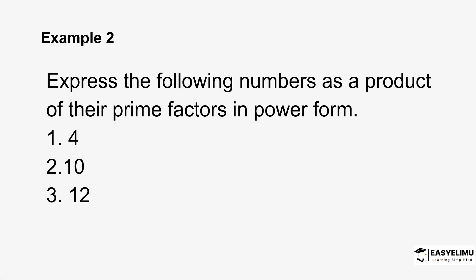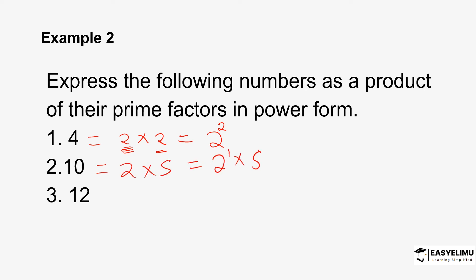We have the second example where you express numbers as a product of their prime factors in power form. For 2 times 2, ask yourself how many times has 2 been multiplied by itself — that becomes the power, so 2 squared. For 2 times 5, it remains 2 to the power 1 times 5 to the power 1. For 12, which is 2 times 2 times 3, it becomes 2 squared times 3 to the power 1. The power indicates how many times the number has been multiplied.